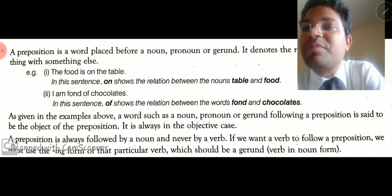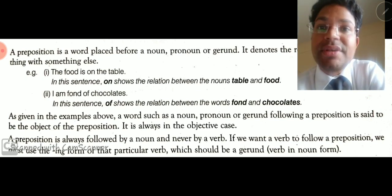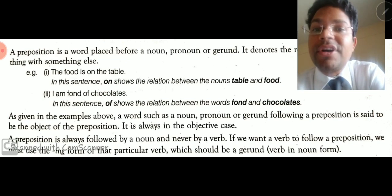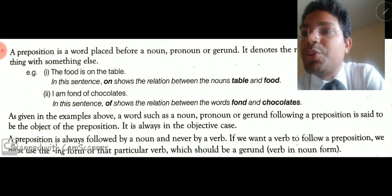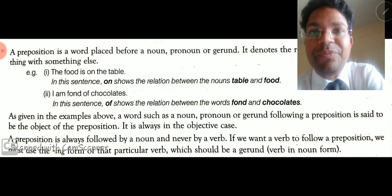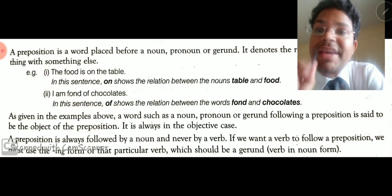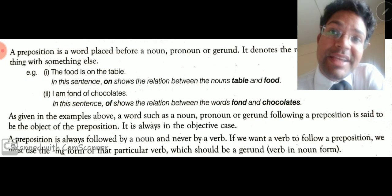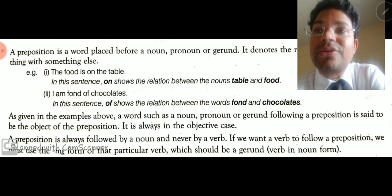A preposition is always followed by a noun and never by a verb. After a preposition, we can never use a verb — we must always use a noun or pronoun. If you want to use a verb after a preposition, you must use its '-ing' form. Because when we put the '-ing' form, it becomes a gerund in the sentence, and gerund is also a kind of noun — it works as a noun in the sentence. So these are the rules for preposition.